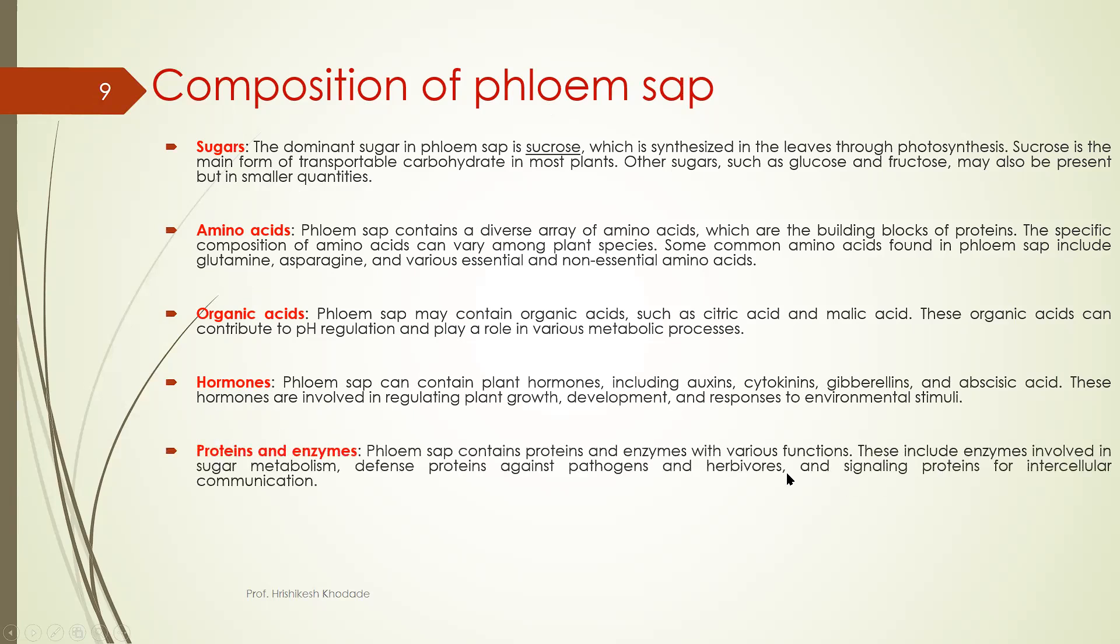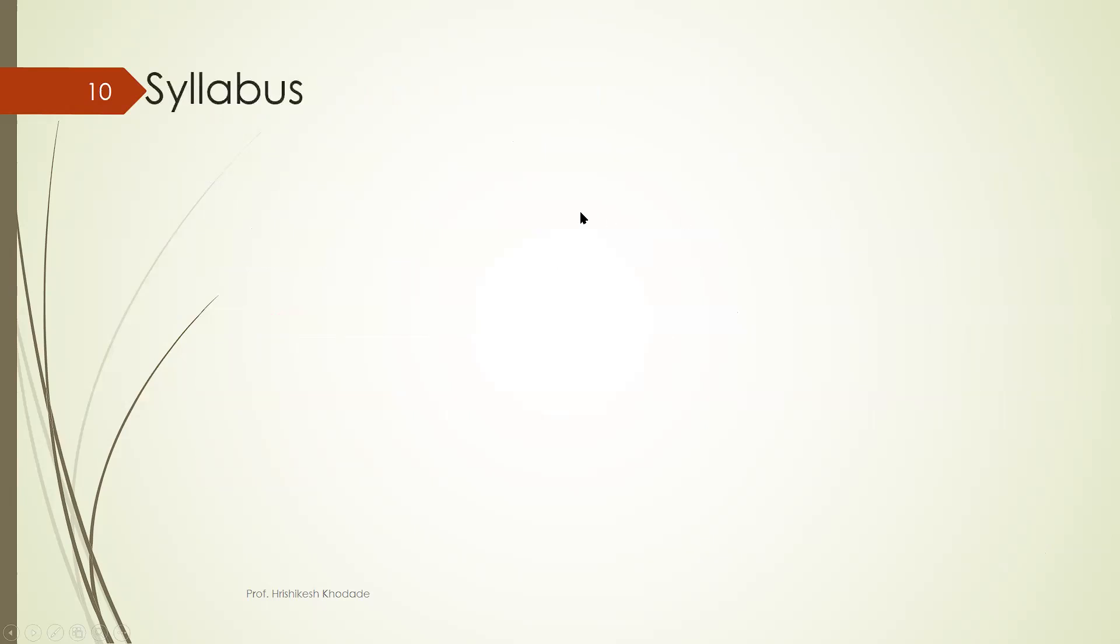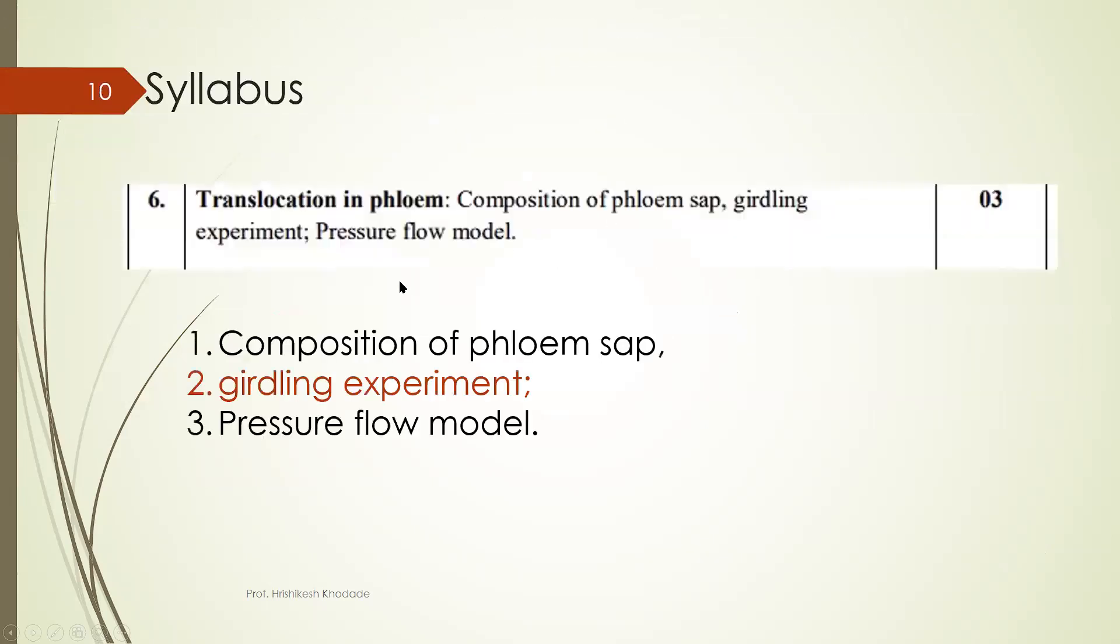Hormones, proteins and enzymes are also present in this phloem sap as well as phytochemicals such as alkaloids, phenolic compounds, flavonoids, terpenoids are present in phloem sap. This you will have to write in your exam if question is asked such as what is composition of phloem sap.